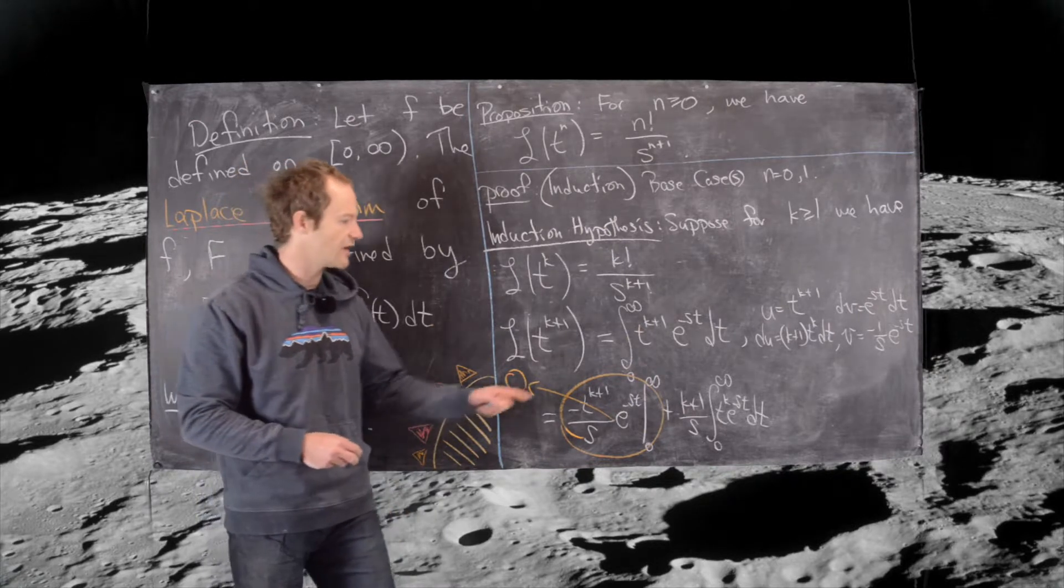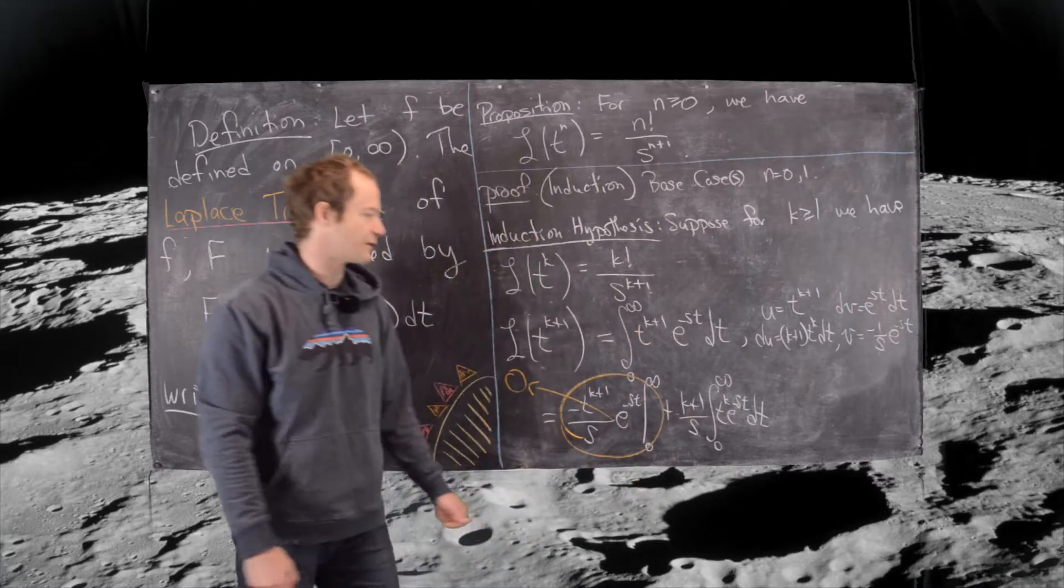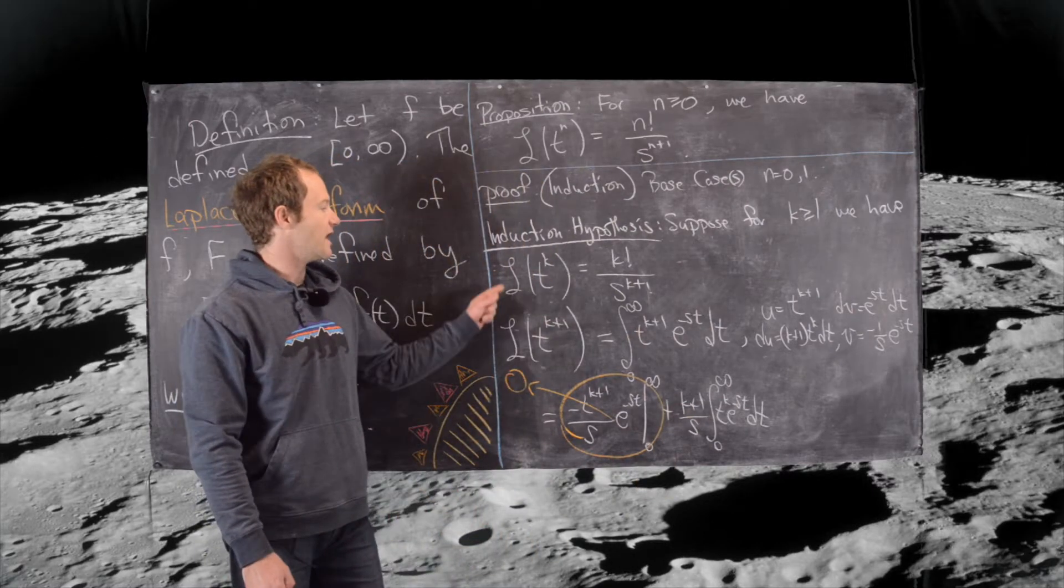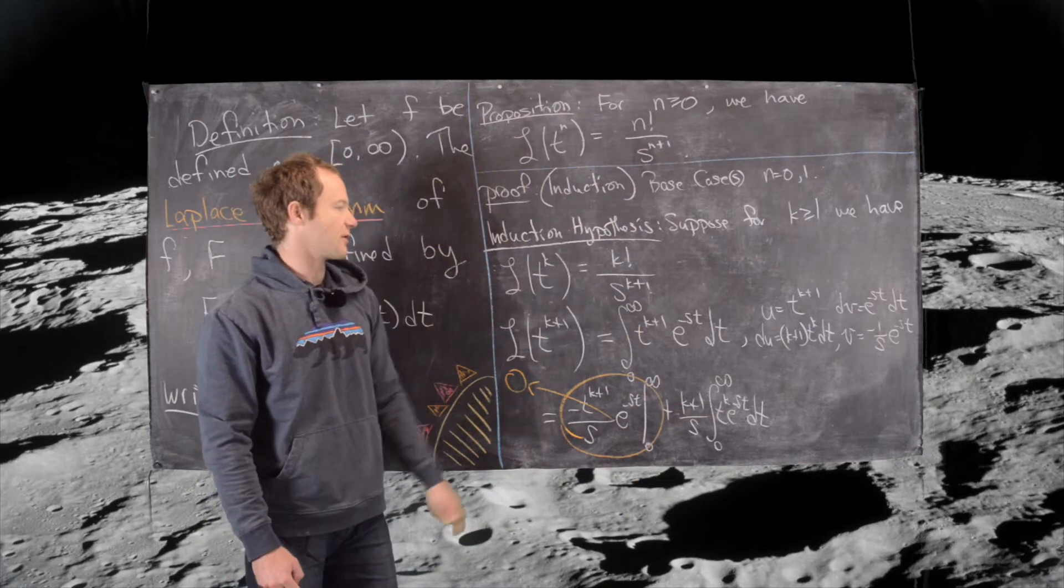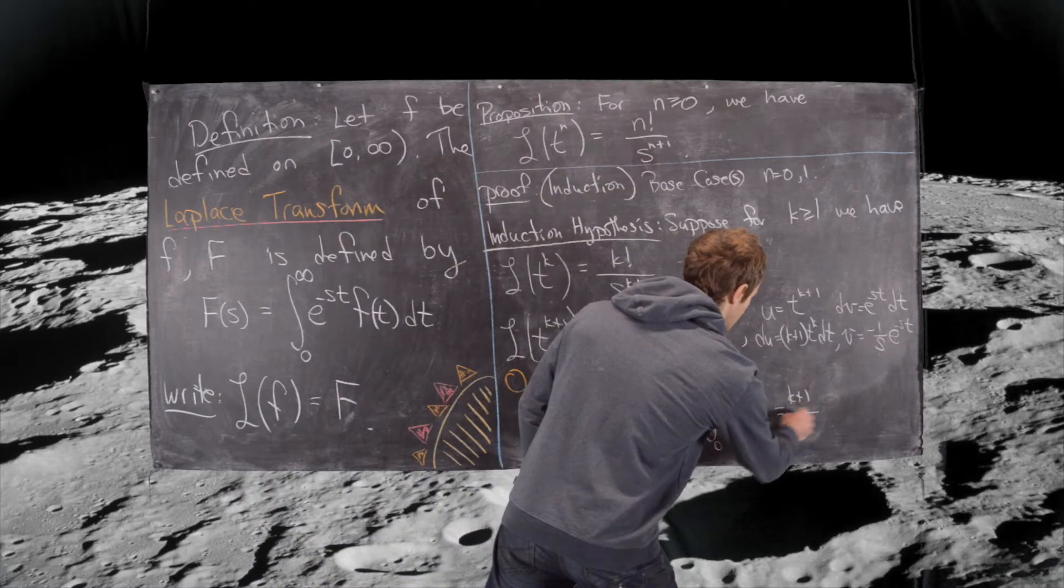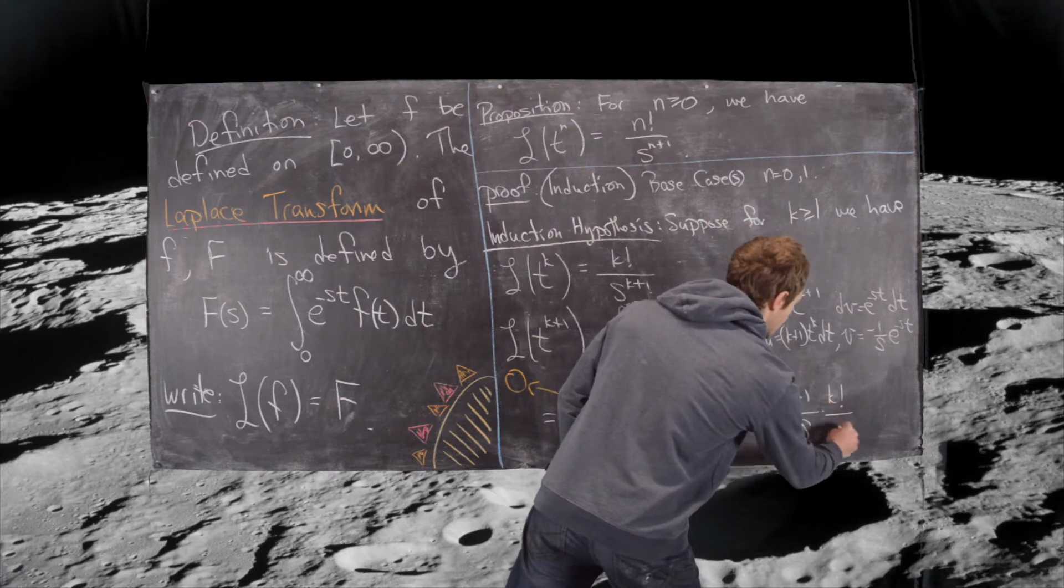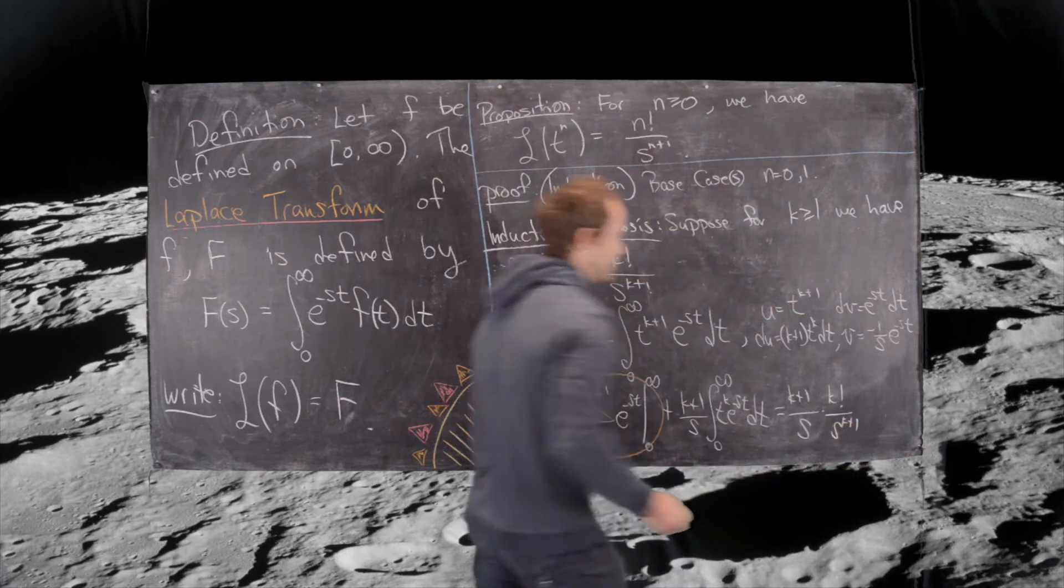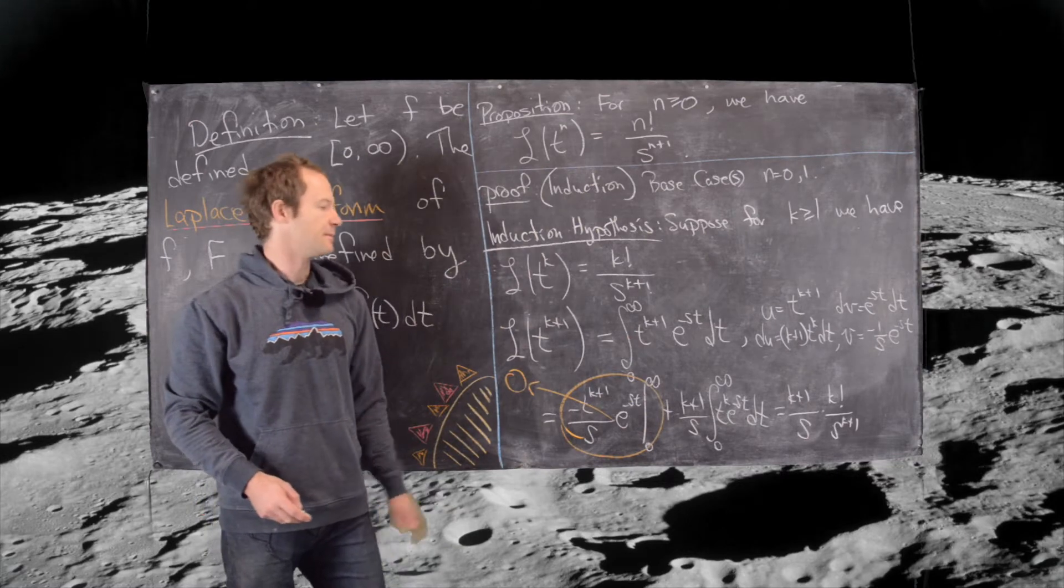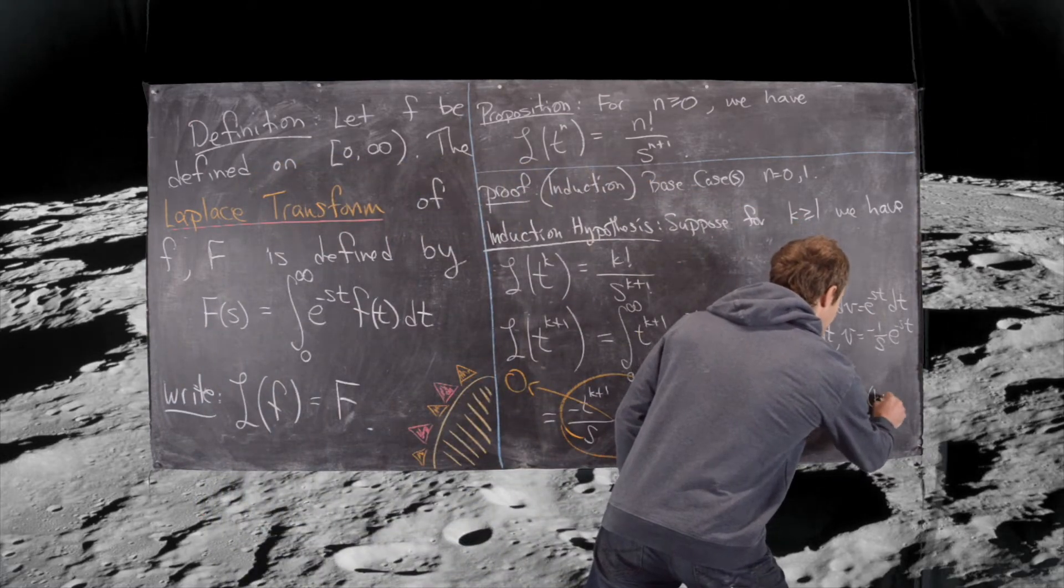Now let's look at this bit. By our induction hypothesis, we can replace this integral with this term right here. So this is equal to k plus 1 over s times k factorial over s to the k plus 1.